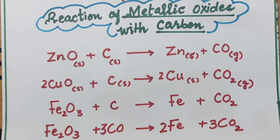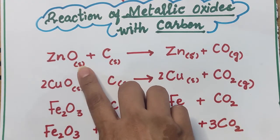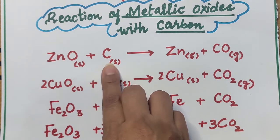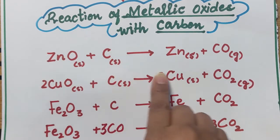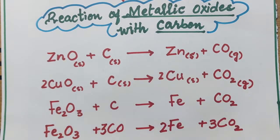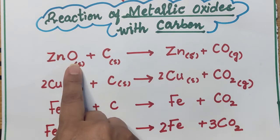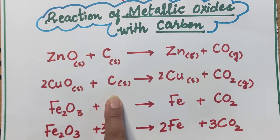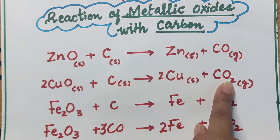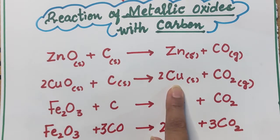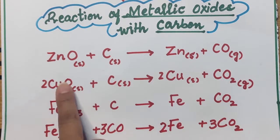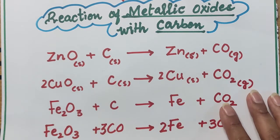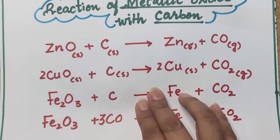Carbon is a strong reducing agent. Zinc oxide, which doesn't react with hydrogen, does react with carbon. Carbon as a reducing agent takes the oxygen from zinc oxide, forming carbon monoxide, and zinc is extracted. Similarly, copper oxide reacts with carbon as a reducing agent — carbon takes the oxygen to form carbon dioxide, and copper is extracted. This is how carbon removes oxygen from least reactive metal oxides.